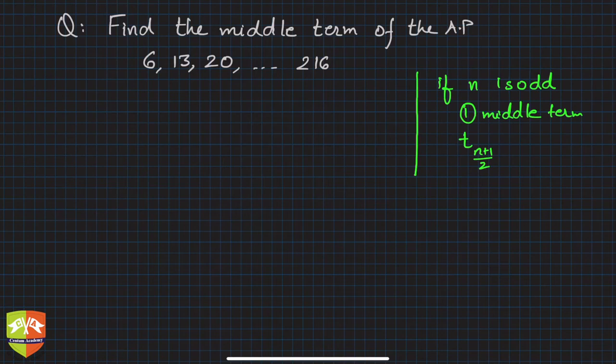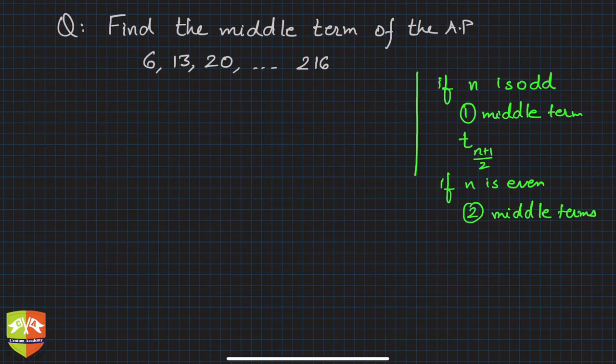If n is even, then there are two middle terms: t(n/2) and t(n/2 + 1). So the conclusion is, for finding any middle term we need to know whether the number of terms is even or odd.